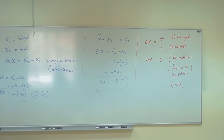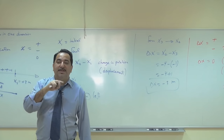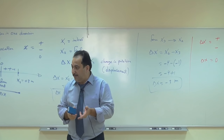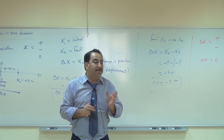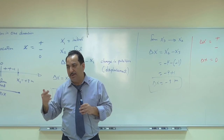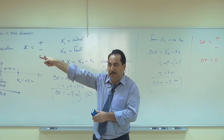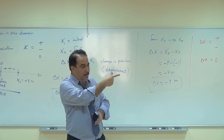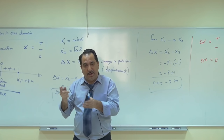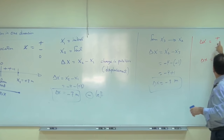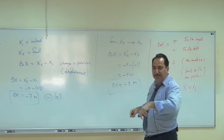In conclusion: displacement can be positive (pointing right), negative (pointing left), or zero. Be careful — delta x positive doesn't mean you are on the positive side of the reference, it just means you are heading right. Similarly, delta x negative just means you are pointing left. And zero has two possibilities: no motion, or motion that takes you back to the same position.